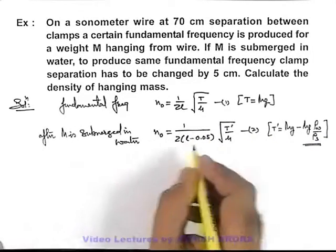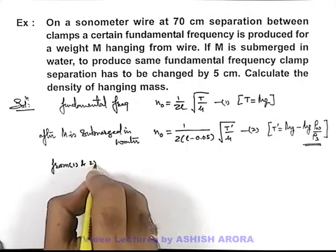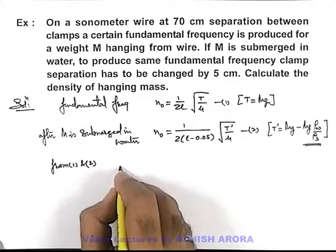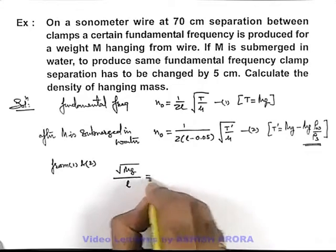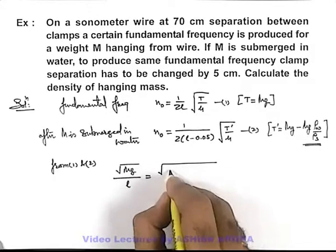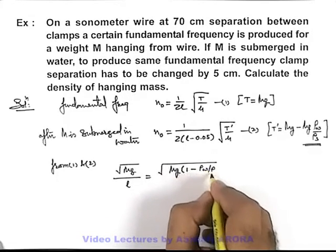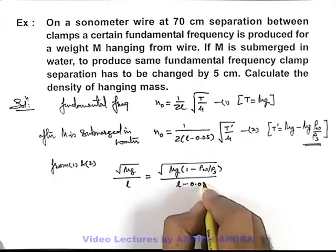Now we can directly get from equations 1 and 2, as the two frequencies are the same. If we equate, this will give us √(mg/l) = √(mg(1 - ρ_water/ρ_solid)/(l - 0.05)).